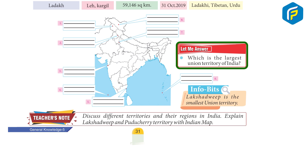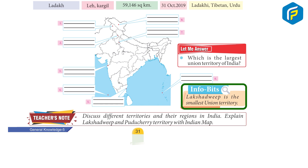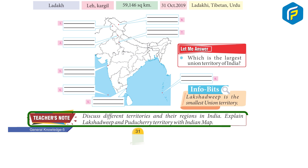Answer: Which is the largest union territory of India? Info bits: Lakshadweep is the smallest union territory. Teacher's note: Discuss different territories and their regions in India; explain Lakshadweep and Puducherry territory with the Indian map.